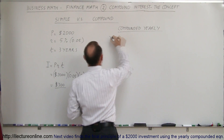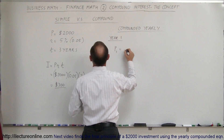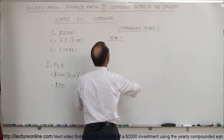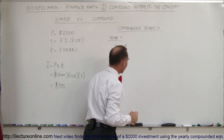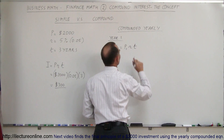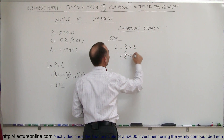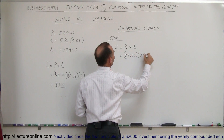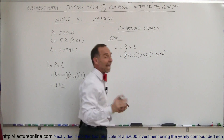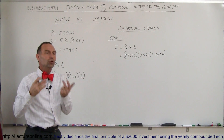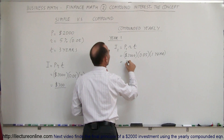So, year one. The interest earned after one year is going to be the principal deposited times the rate times the time. In this case that's $2,000 initially invested times the rate of 0.05 times one year, because after one year we're going to add the interest to the principal to become the new principal for the second year. So that is equal to $100.